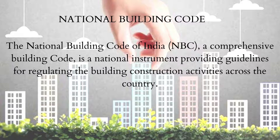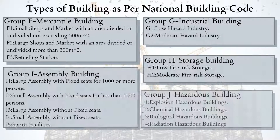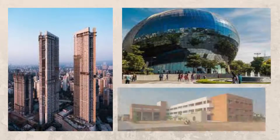National Building Code: The National Building Code of India, a comprehensive building code, is a national instrument providing guidelines for regulating building construction activities across the country. Types of buildings as per National Building Code: Group A — Residential Building, Group B — Educational Building, Group C — Institutional Building, Group D — Healthcare Facilities Building, Group E — Business Building, Group F — Mercantile Building, Group G — Industrial Building, Group H — Storage Building, Group I — Assembly Building, Group J — Hazardous Building.